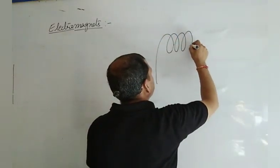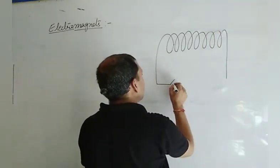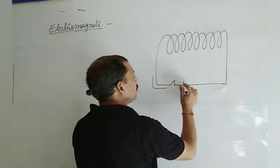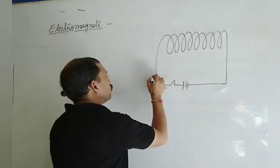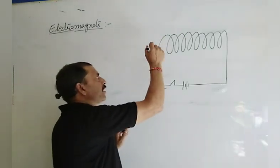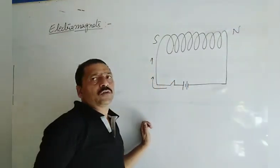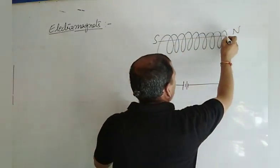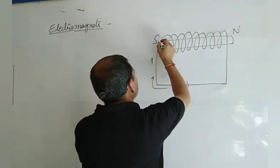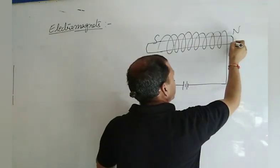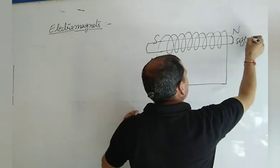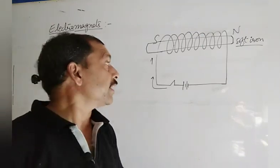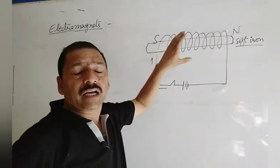If we have a coil and pass a current across it in a certain direction, the current flows in a clockwise direction, which creates a south pole on one side and a north pole on the other, and it starts working like a magnet — this is a solenoid. If we place a soft iron core rod inside this solenoid, the soft iron core starts to function as a magnet and increases the magnet's strength hundreds of times.